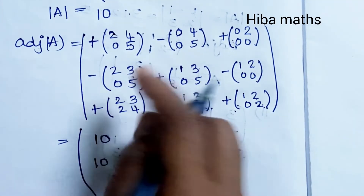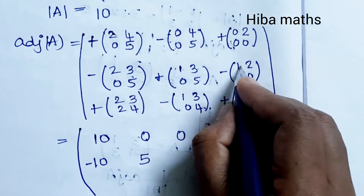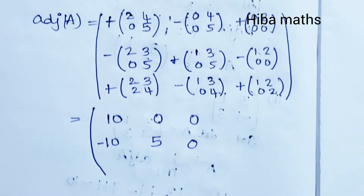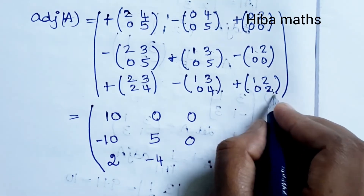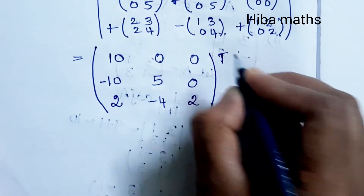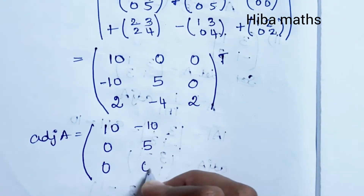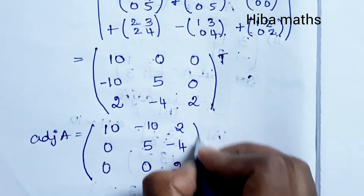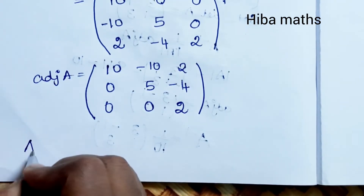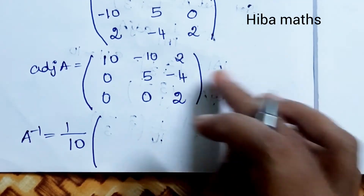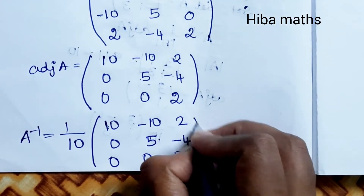Continuing: 2×5 = 10, minus 0; then -[0×5 - 0×4] = 0; then 2×4 = 8 and 3×2 = 6, so 8 - 6 = 2; then 1×4 - 0×3 = 4, so minus gives -4; and finally 1×2 - 0×2 = 2. Transposing the cofactor matrix gives adjoint of A = [10, 0, 0; -10, 5, 0; 2, -4, 2]. So A inverse = (1/10) × [10, -10, 2; 0, 5, -4; 0, 0, 2].